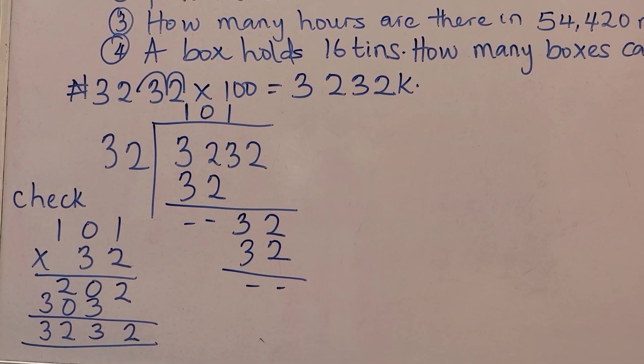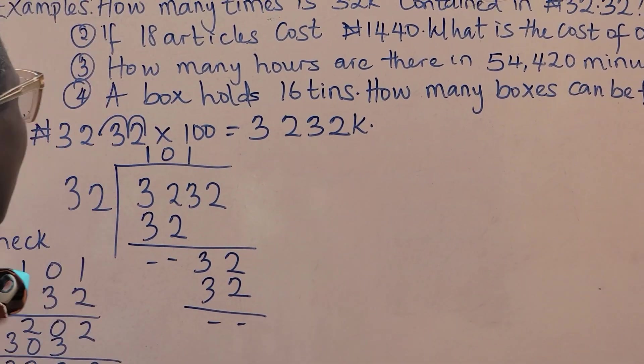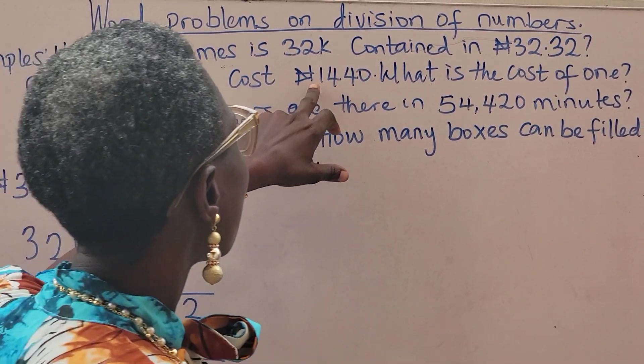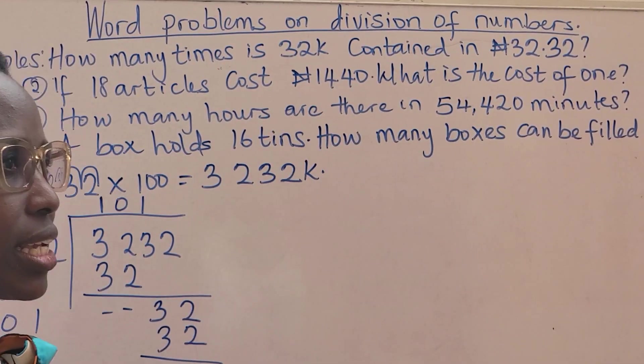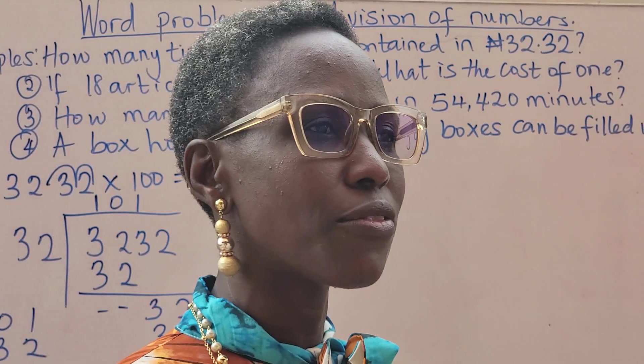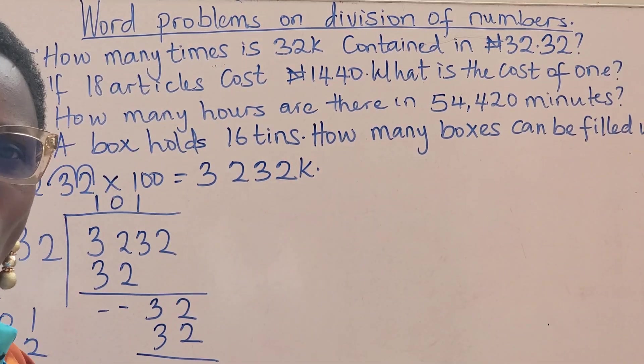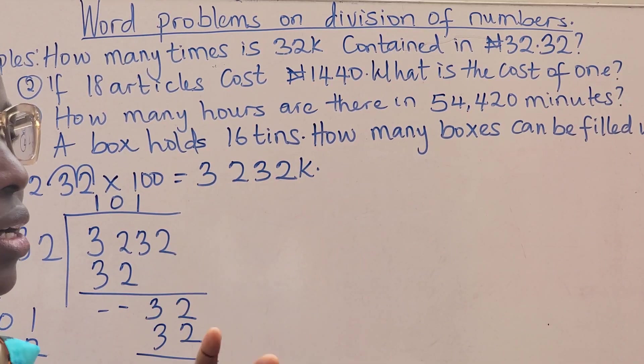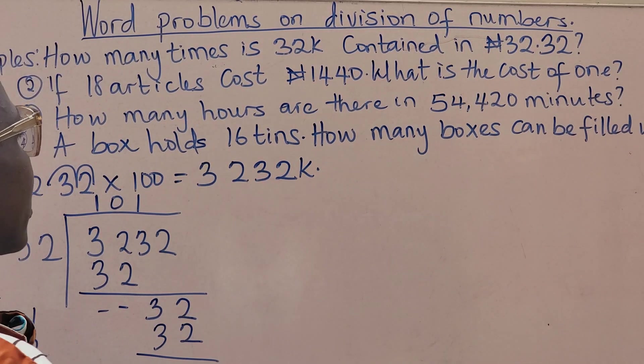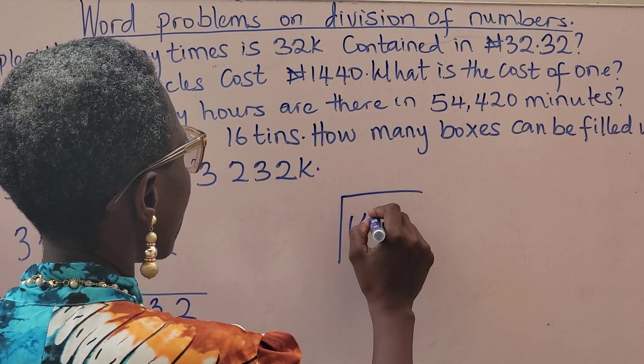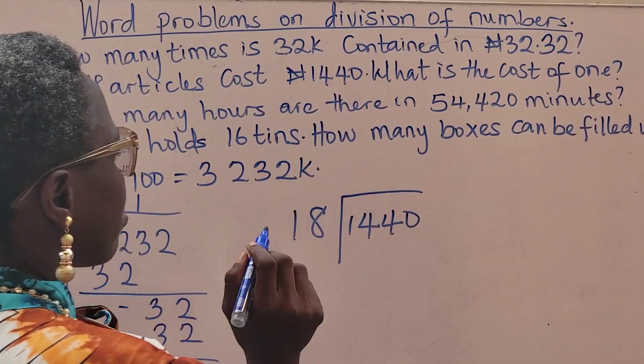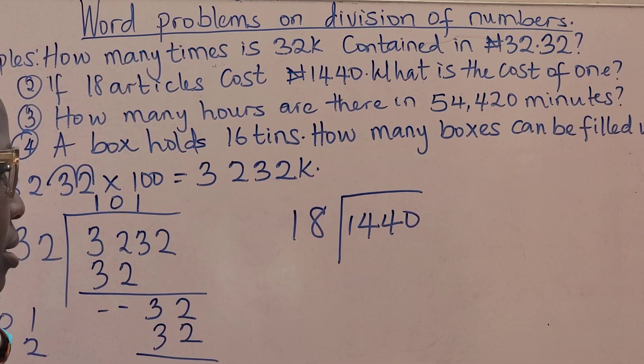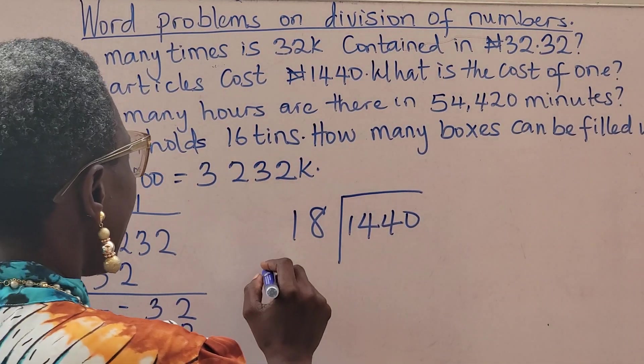The second question says if 18 articles cost 1440 naira, what will be the cost of one? So we have 1440 divided by 18.